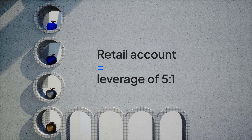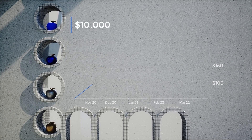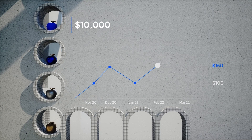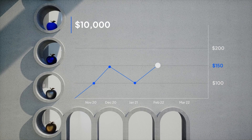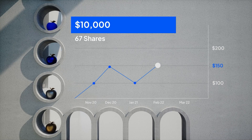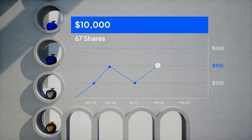For reference, the retail account allows leverage of 5 to 1, so a 20% margin. A trader wants to buy $10,000 worth of Apple shares at $150, as he believes the price will go to $200. With direct shares, he would buy 67 shares and would need the full $10,000 to cover the transaction.